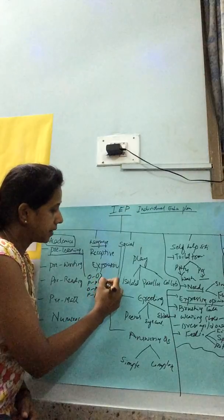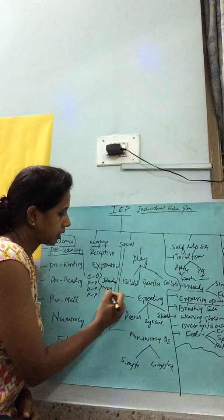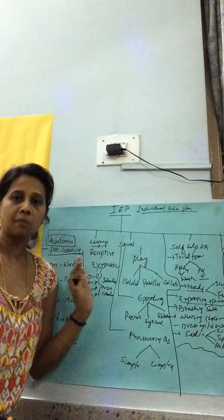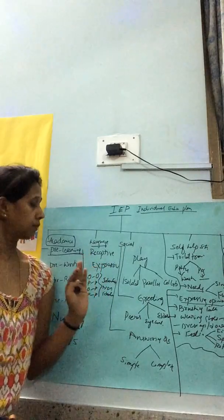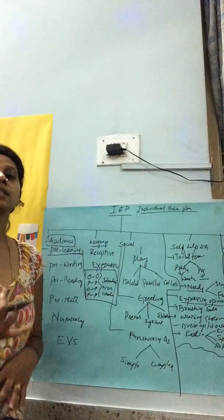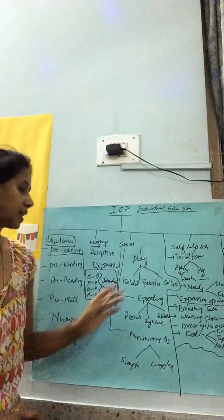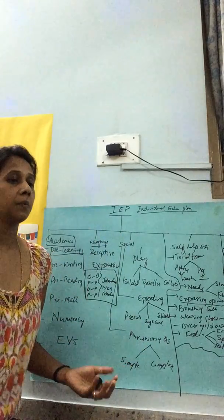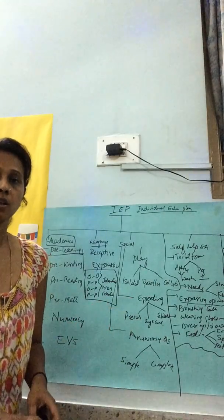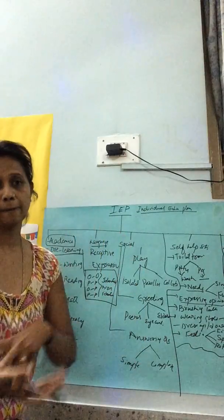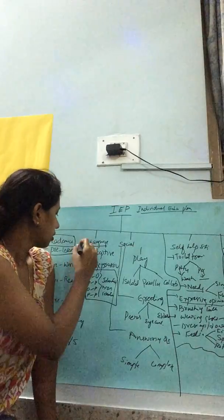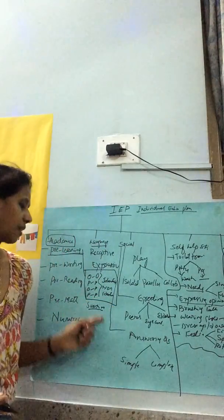Matching variations include identical and then non-identical matching. Once he masters these skills at the table, we move on to testing in real life — generalization — without him knowing he's being tested. For example, in the kitchen when utensils are washed, we tell him to get all the cups or all the spoons. That covers both matching and sorting.